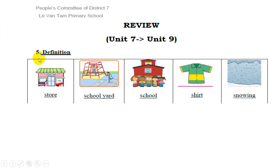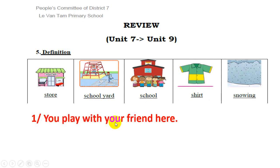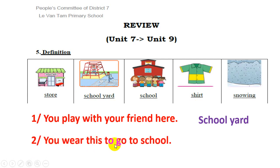For exercise three — Definition. Look at these pictures: storm, school yard, school, shirt, snowing. The question is: you play with your friend here — which one do you choose? School yard. This is the correct answer. Question two: you wear this to go to school — which one do you choose? Store? School yard? School? Shirt or snowing? Let's choose shirt. Shirt is the correct answer. Please do the other questions at home.